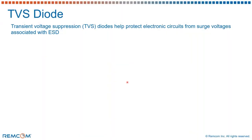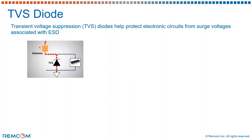TVS diodes, unlike other PN junction diodes, have a large cross-sectional area for absorbing high transient currents, and in case of an over-voltage event, these diodes shunt most of the current to the ground, allowing a very minimal flow of voltage through the components that need to be protected.